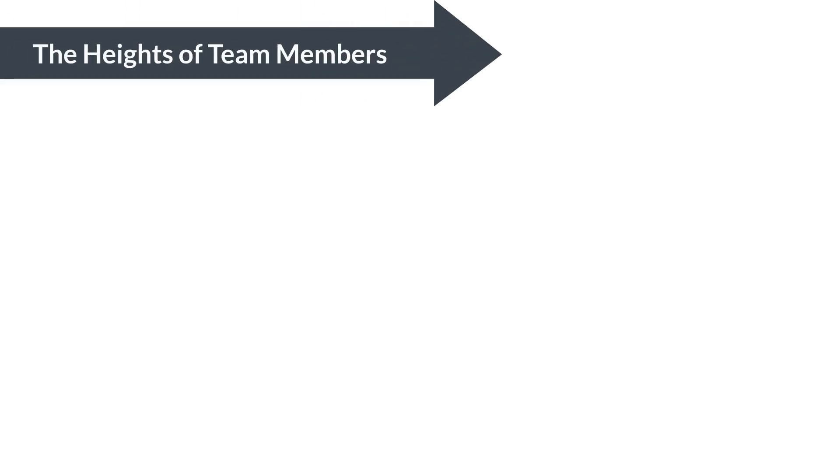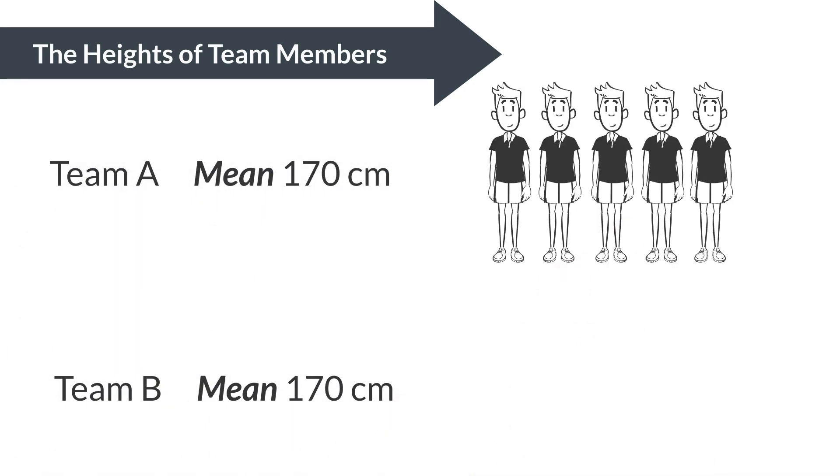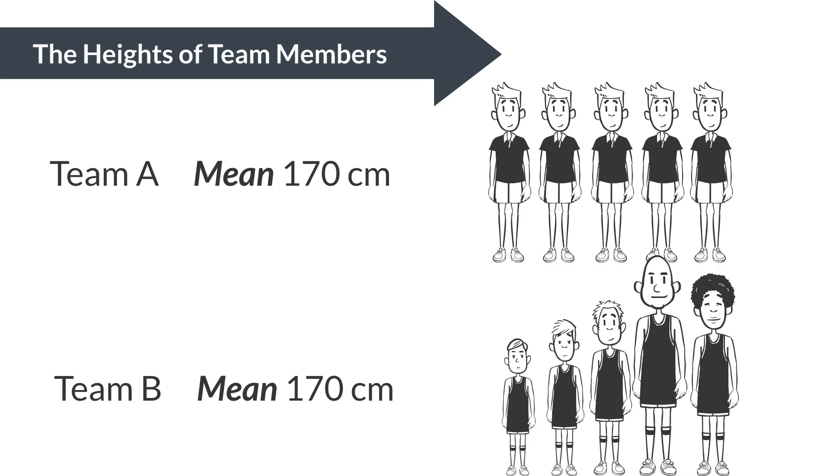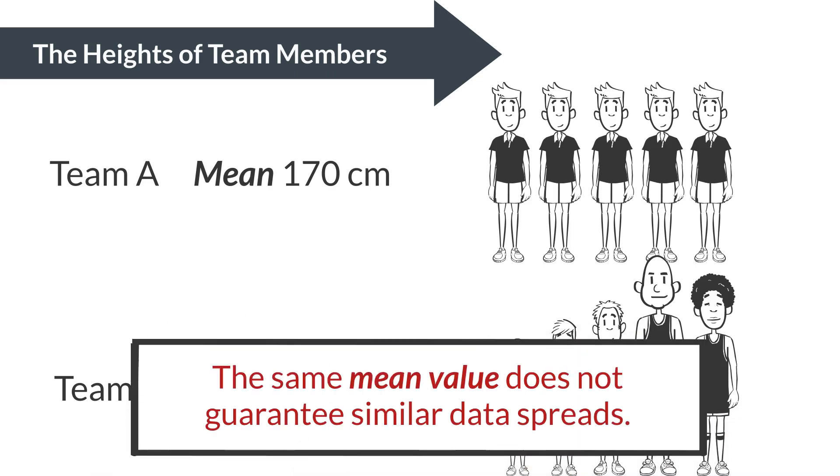Consider two junior high school basketball teams, Team A and Team B. Both have five players and a mean height of 170 centimeters. But having the same mean doesn't really mean they're made up the same way. Just conveying the mean doesn't always give a clear picture of the actual situation.